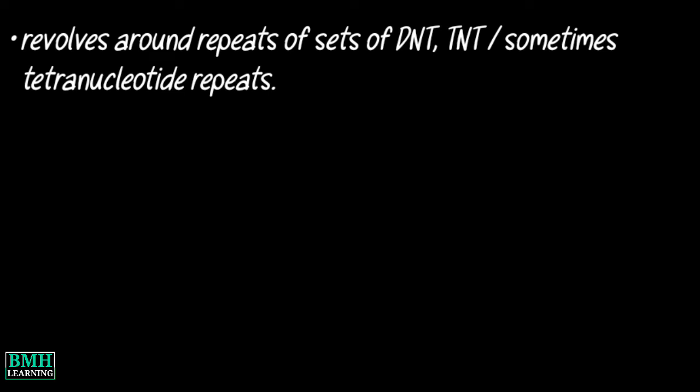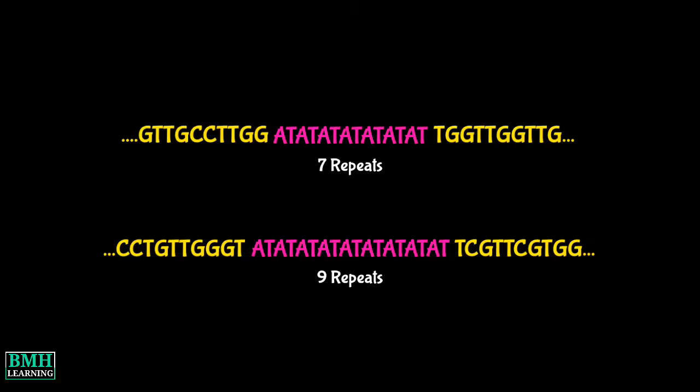As a type of variable number tandem repeat, its principle revolves around repeats of sets of dinucleotide, trinucleotide, or sometimes tetranucleotide repeats. The diagram shows an illustration of microsatellites of 80 dinucleotides. The polymorphism occurs when the upper sequence has 7 repeats of the dinucleotide while the lower strand has 9 repeats.